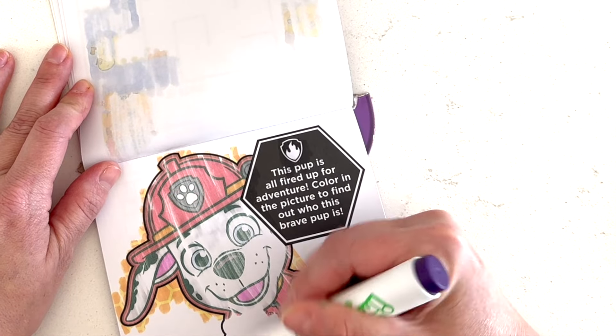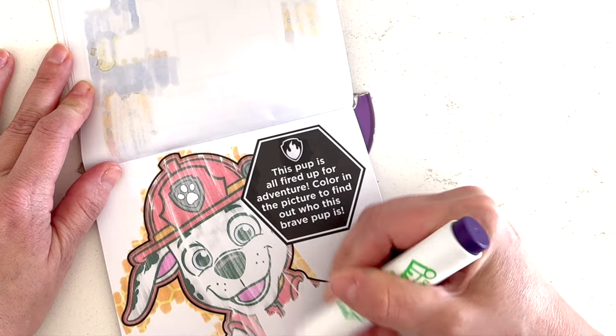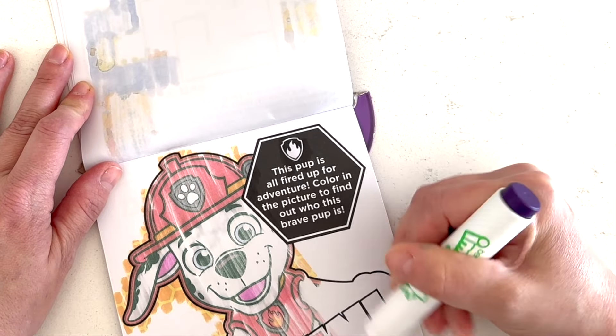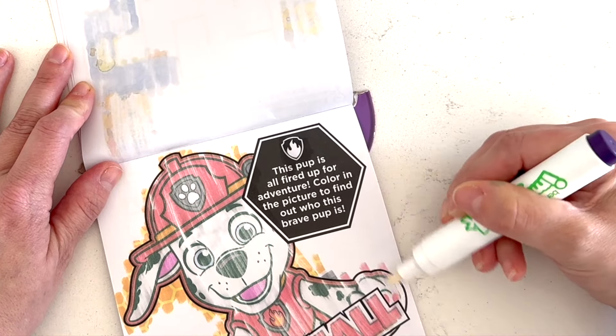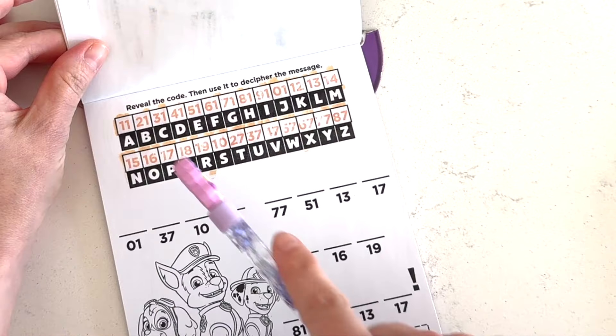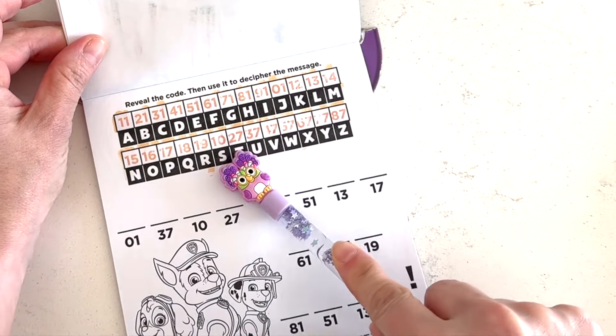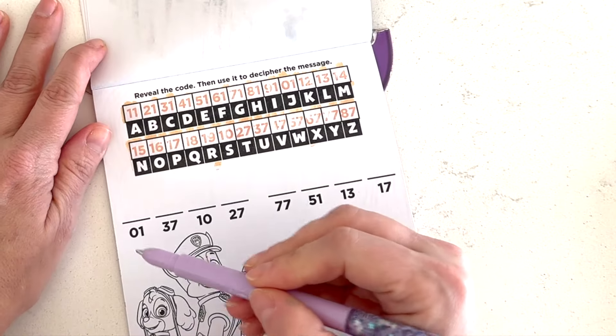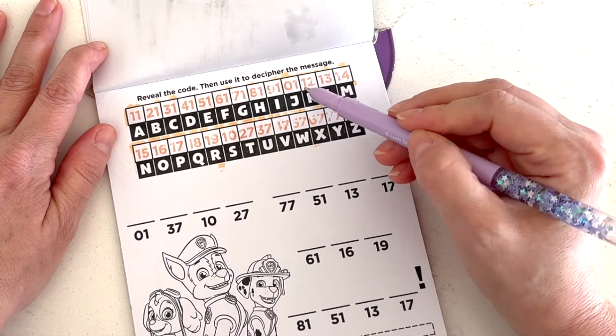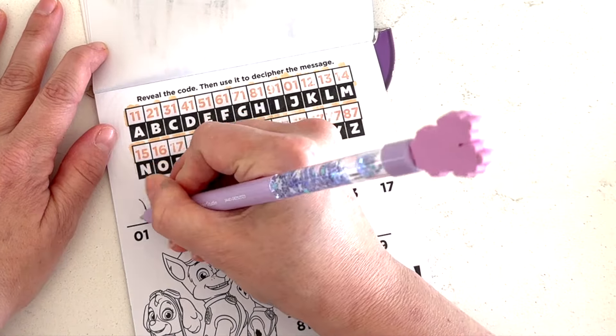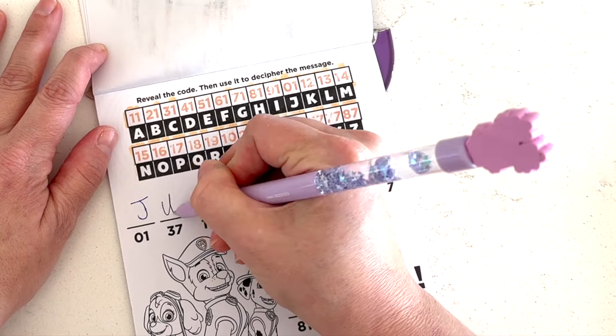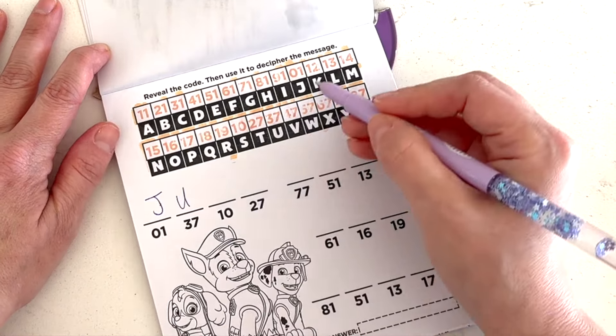Hmm. Is that Skye? Is she usually all fired up? I don't know. It's the firefighter doggy. Do you remember who that is? It's Marshall. M-A-R-S-H-A-L-L. He's all fired up. We revealed the code. Then we used it to decipher the message.